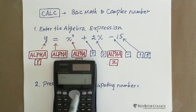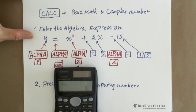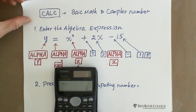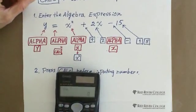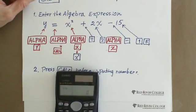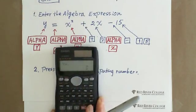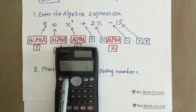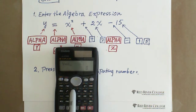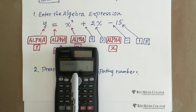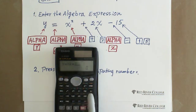Enter X squared — press ALPHA, then the X squared button — plus, and 2 times X using the ALPHA button then X, then minus 50. So the full expression entered is Y = X² + 2X - 50.